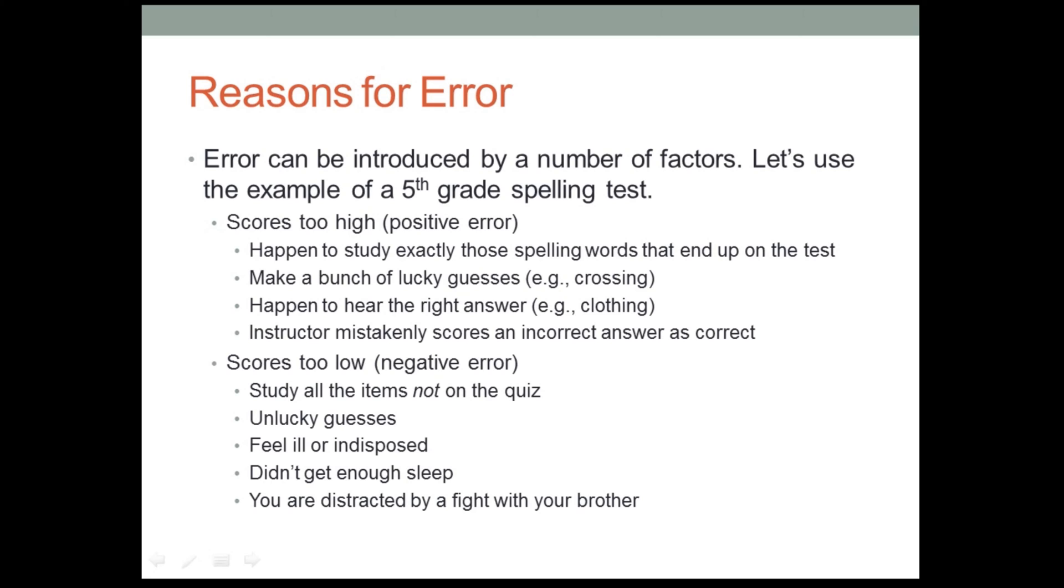Then there are the instances where you get a score that's lower, and to some extent, these are just parallel to the ones we just looked at. You might study all the items by accident that were not on the quiz, or you might make unlucky guesses on your test. But there are some other issues as well. You might feel ill or indisposed when you're taking the test. You might not have gotten enough sleep. You might be distracted. Maybe there was a fight between your parents or a fight between you and your brother. And so for whatever reason, you just didn't perform as well on the test as you would have liked, and your actual true spelling ability, in fact, is higher. So those are some of the reasons for error.